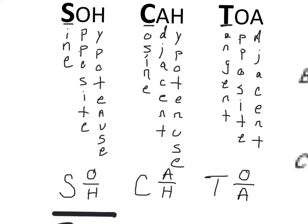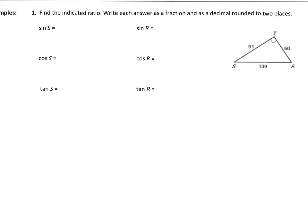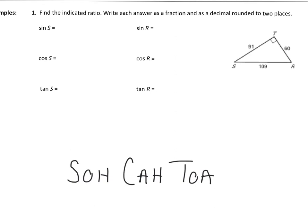Sometimes students write SOHCAHTOA a little differently just to remind them that these are ratios — instead of three words, you might see S with O over H for sine opposite over hypotenuse, cosine as adjacent over hypotenuse, and tangent as opposite over adjacent. That brings us to our first example. To start off for any of the examples, whether you're just setting up the ratio or solving for a side length, I would just write out your phrase: SOH, CAH, TOA.